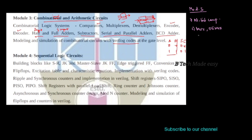For Module 3 questions, you may need to think about the Realization of MUX. If we have a MUX, we have many inputs and a single output. For example, realizing an 8-to-1 MUX using 4-to-1 or 2-to-1 multiplexers.